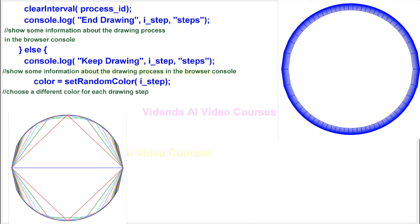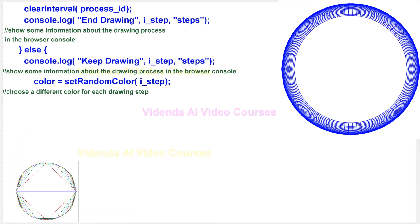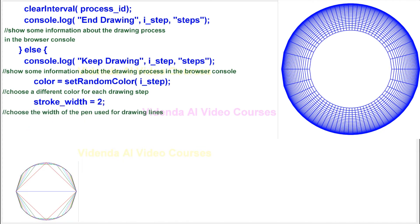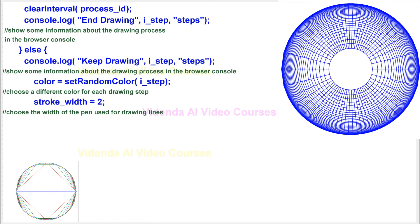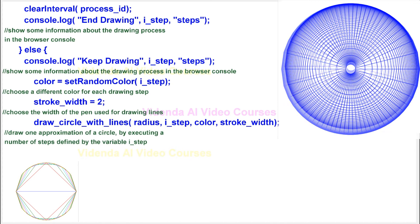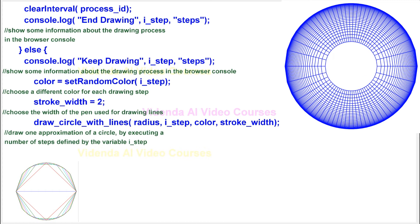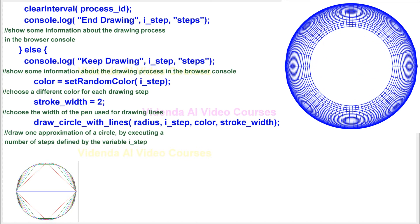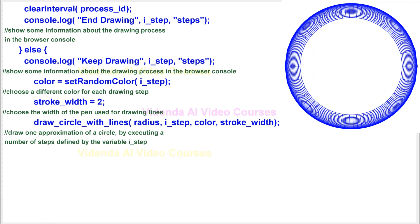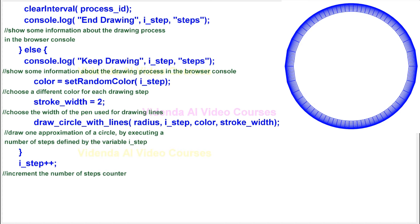Choose a different color for each drawing step. Choose the width of the pen used for drawing lines. Draw one approximation of a circle, by executing a number of steps defined by the variable i_step. Increment the number of steps counter.